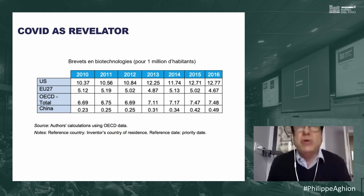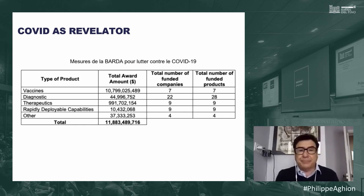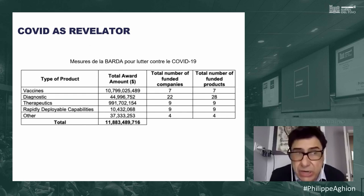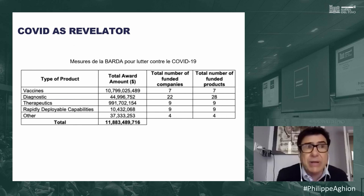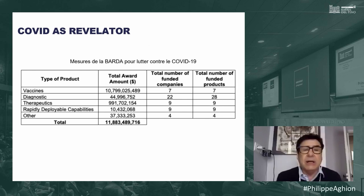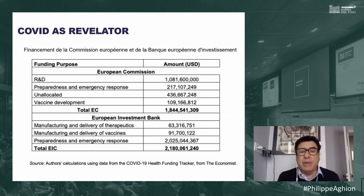They then created ARPA-E for energy and BARDA — the Biomedical Advanced Research and Development Authority — which is the DARPA equivalent for biotech products. BARDA financed the COVID vaccines. The mRNA technology was the basic research; BARDA coordinated turning it within a year into mass-produced vaccines, financing Moderna, Pfizer, and Johnson & Johnson, spending $12 billion on COVID vaccines. By comparison, the European Commission and EIB spent only $4 billion and have no equivalent of BARDA.